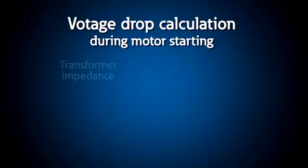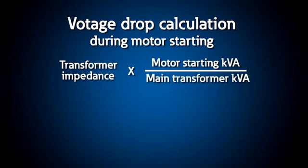The voltage drop during startup can be calculated precisely using power system analysis software, or it may be estimated with simple calculations. In many systems, the upstream transformer is the predominant system impedance, so you can estimate the voltage drop during motor starting by multiplying the transformer impedance by the ratio of the motor starting kVA and the main transformer kVA.